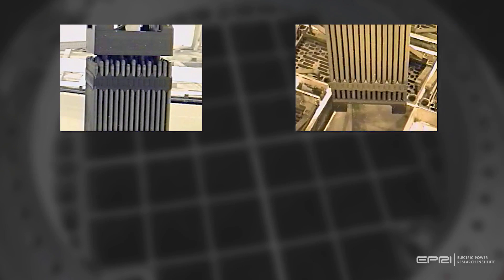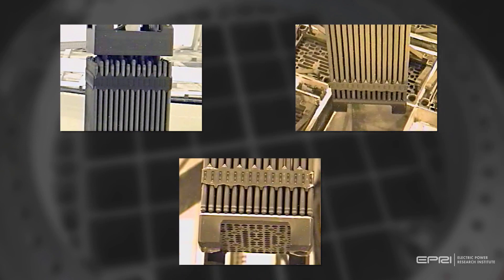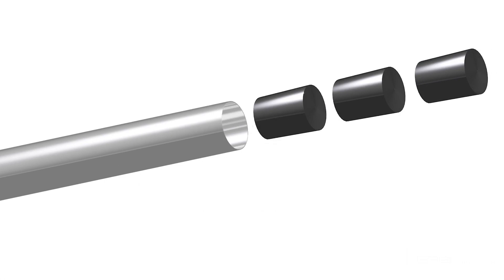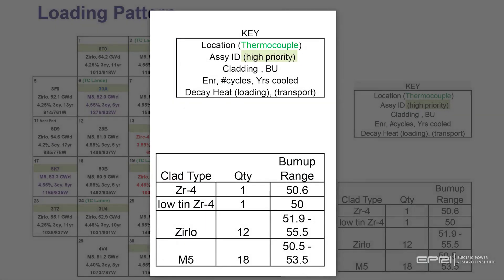EPRI selected the fuel for the research project in close collaboration with Dominion Energy Virginia, DOE, and the National Laboratories. Factors considered included both peak temperature and the range of temperatures for the different cladding materials. Cladding is the metal tubing used to contain the uranium fuel pellets. The host site had four types of cladding available, making Dominion Energy Virginia's North Anna Power Station an excellent choice.